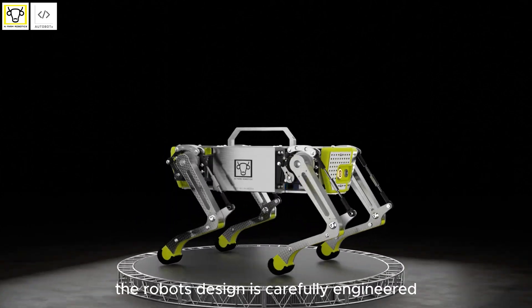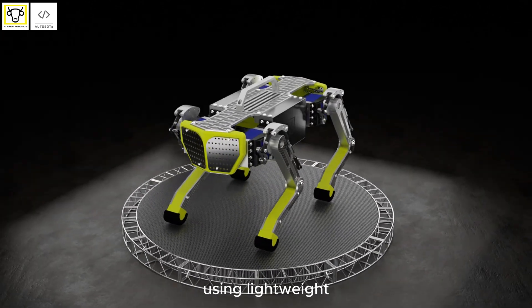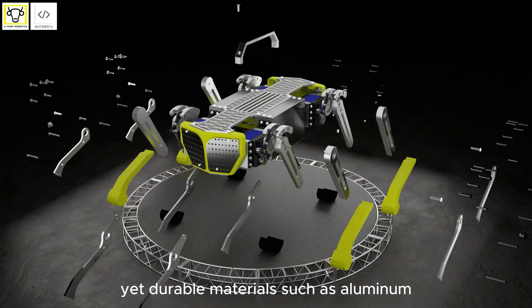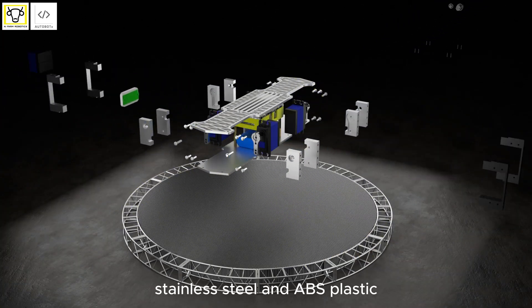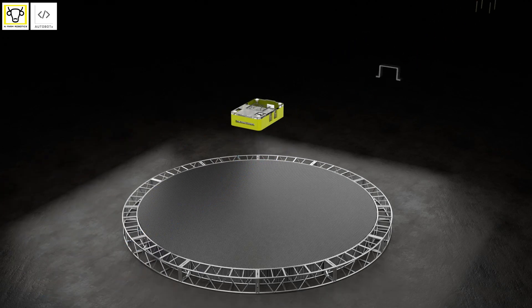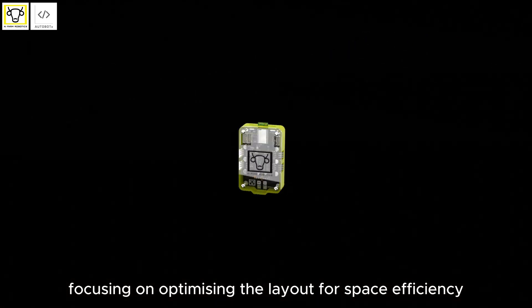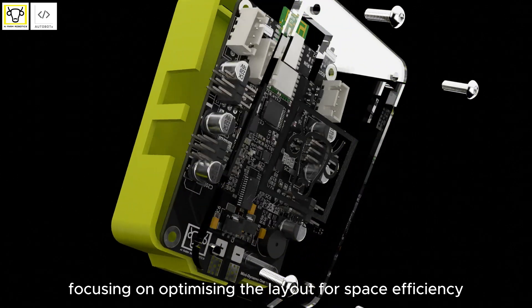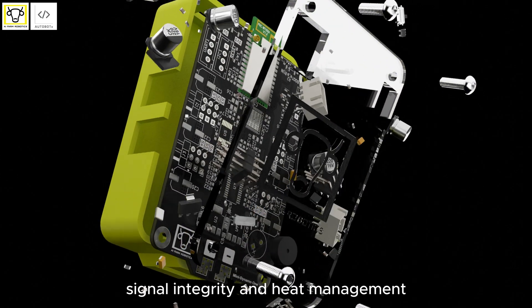The robot's design is carefully engineered using lightweight yet durable materials such as aluminum, stainless steel, and ABS plastic, achieving both strength and flexibility. The PCB design focuses on optimizing the layout for space efficiency, signal integrity, and heat management.